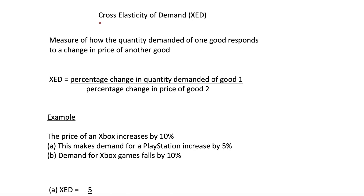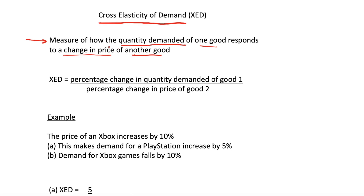In this video we'll be looking at cross elasticity of demand, or XED. We can remember this abbreviation because an X is sort of like a cross — so XED, cross elasticity of demand. It is a measure of how the quantity demanded of one good responds to a change in price of another good. Unlike price elasticity or income elasticity of demand, we're looking at two different goods and how demand for one changes when the price of another changes.